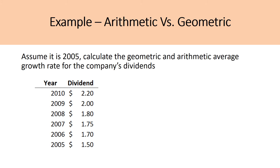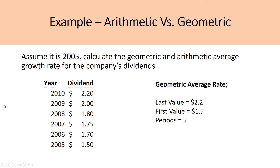Let's take a look at a more complex example comparing the arithmetic and geometric average growth rates. Assume it is 2005 — calculate the geometric and arithmetic average growth rate for the company's dividends. We have a six-year history for this company's dividend. To calculate the geometric average growth rate, we take the ending (most recent) dividend, which is $2.20, and the starting value, which is $1.50, and the number of periods, which in this case is 5.